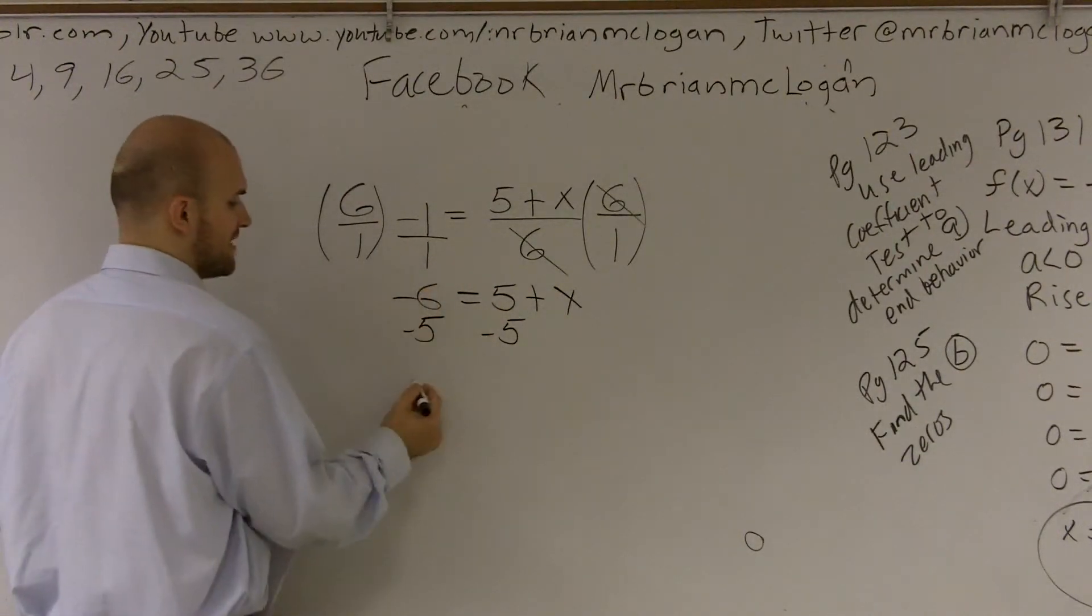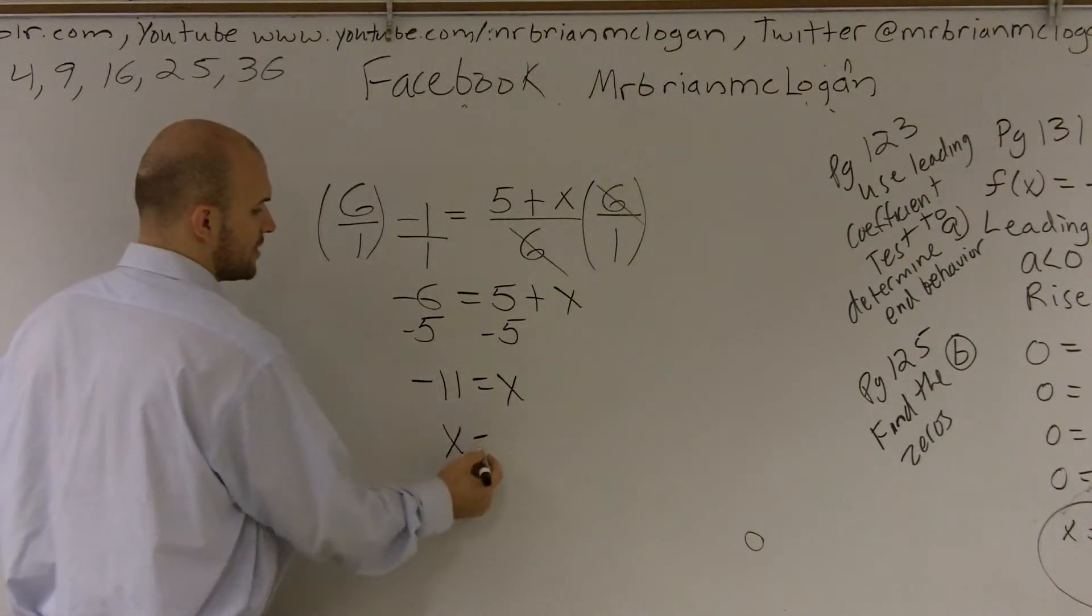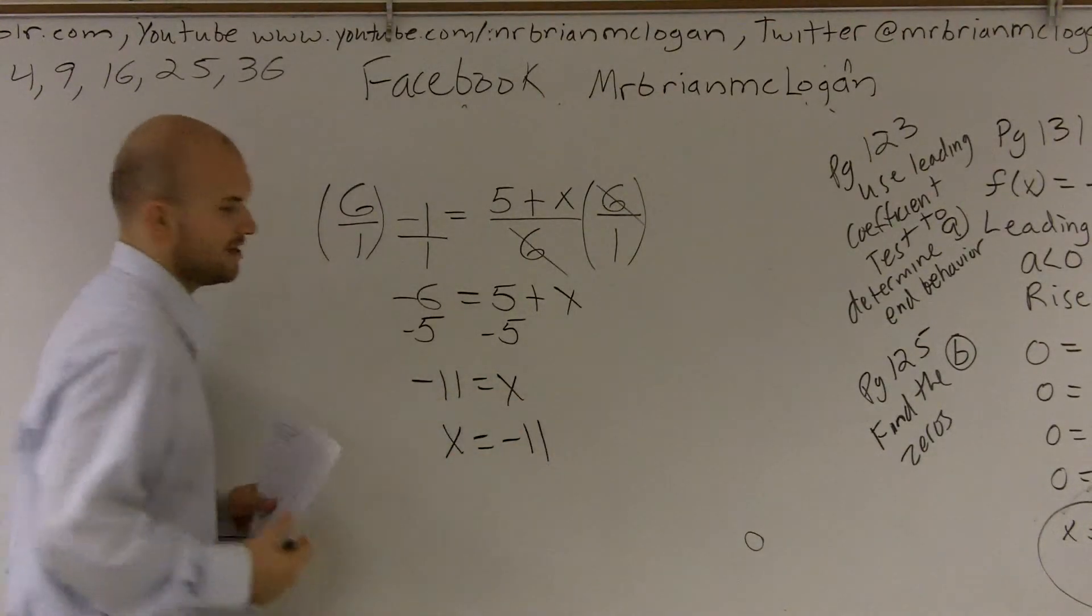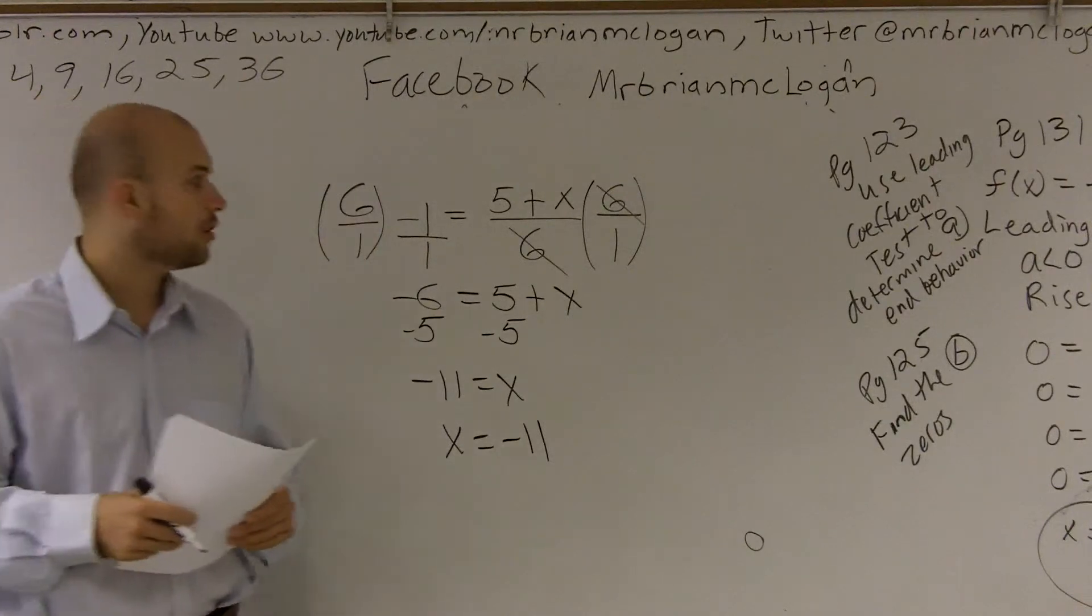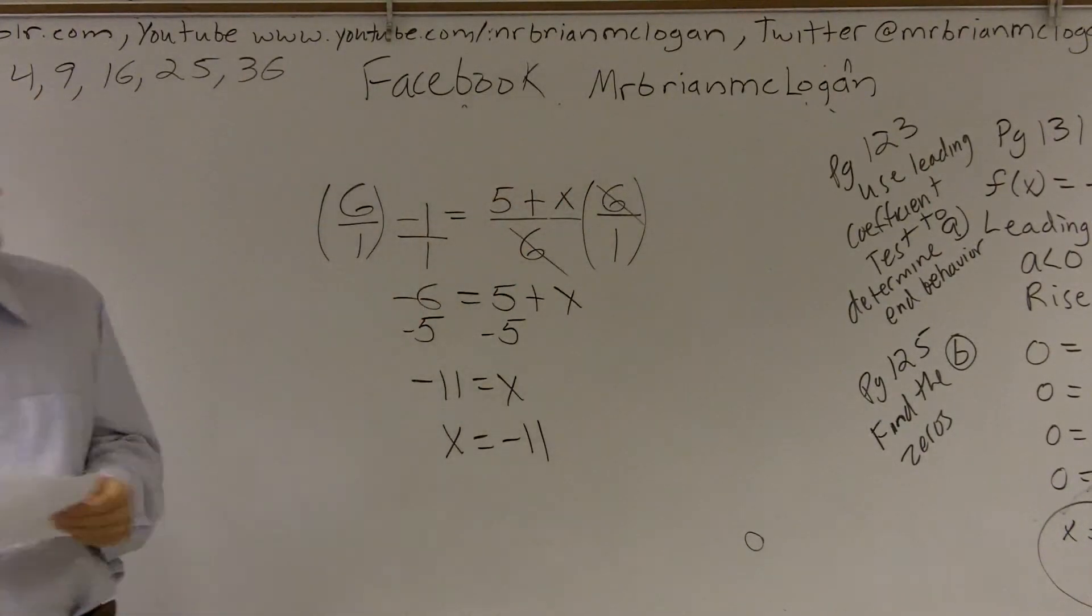Negative 6 minus 5 is negative 11, equals x. And then we always like to write our variable: x equals negative 11. So that's how you solve an equation when you have everything that's being divided by a number.